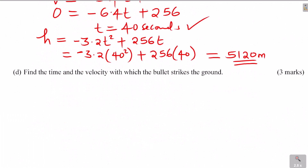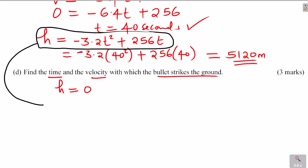Part D: Find the time and the velocity with which the bullet strikes the ground. When the bullet strikes the ground, its height will be zero. So we take the expression for height and set it equal to zero: 0 equals negative 3.2T squared plus 256T.